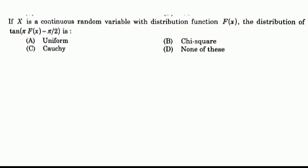Question 17: The distribution of tan(φ · f(x) − π/2) using the distribution function — Options: A: uniform, B: chi-square, C: Cauchy, D: none of these. Answer: Option C, Cauchy distribution.